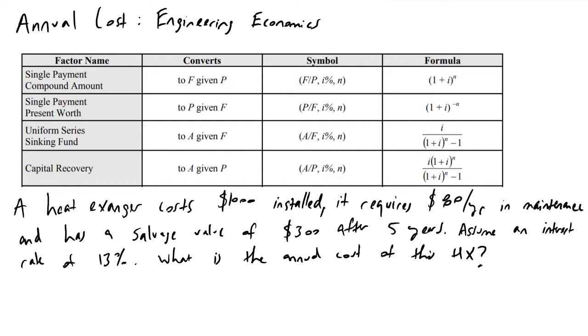And so the first thing to note here is that the key equations we're going to be interested in are converting our present value, which is this $1,000 that we're gonna have to spend upfront right now to get this heat exchanger installed, as well as this $300, but it's going to only be there after five years. So what we're going to have to do is convert a lump sum that we pay right now into an annual cost and also convert a dollar figure that we're going to get in the future to an annual cost or an annual windfall you could think of it as.